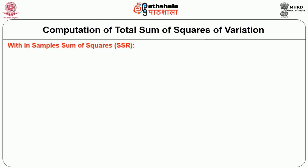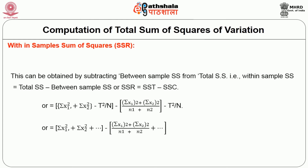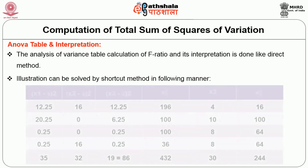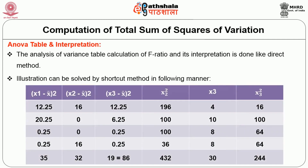The within-sample sum of squares is obtained by subtracting the between-sample sum of squares from the total sum of squares: SSE = SST − SSC. Then the analysis of variance table, calculation of F-ratio, and its interpretation are done as in the direct method.